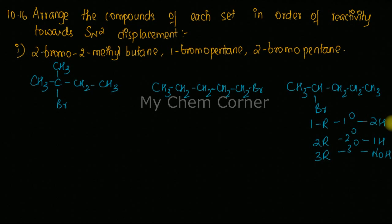With this information, we identify which compounds support SN2 mechanism. From the haloalkanes chapter, we know the SN2 preference order is: primary alkyl halide first, then secondary, and lastly tertiary. The highest preference is for a primary alkyl halide, and the least is for a tertiary alkyl halide.